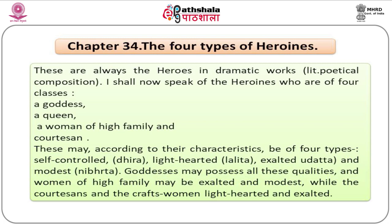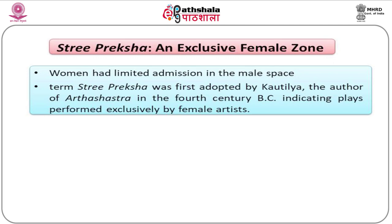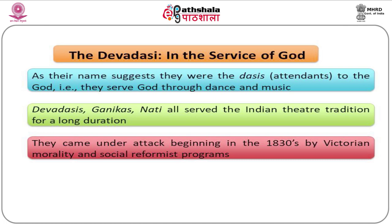Stripreksha is an exclusive female zone; women have limited admission in the male space. The term Stripreksha was first adopted by Kautilya, author of Arthashastra in the 4th century, indicating plays performed exclusively by female artists. As their name suggests, Devadasis were attendants to God, serving God through dance and music. Devadasis, Ganikas, and Nati all served the Indian theatre tradition for a very long time, coming under attack in the 1830s due to Victorian morality and social reformist programs.